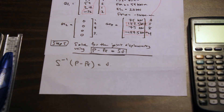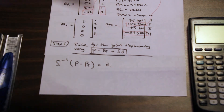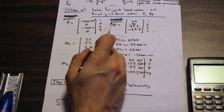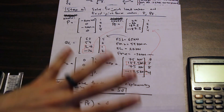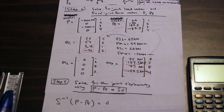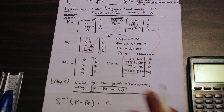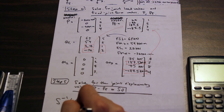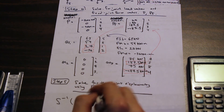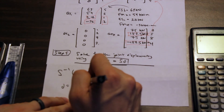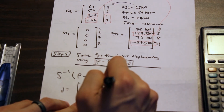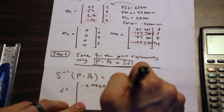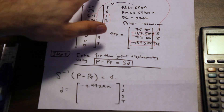I did make a small error earlier — I said the matrix was one-by-number-of-degrees-of-freedom, but it's actually number-of-degrees-of-freedom by one. I apologize for that. So we solve for the joint displacements using P minus PF, and you'll get values for D. These are fairly small numbers, so pay attention to scale.